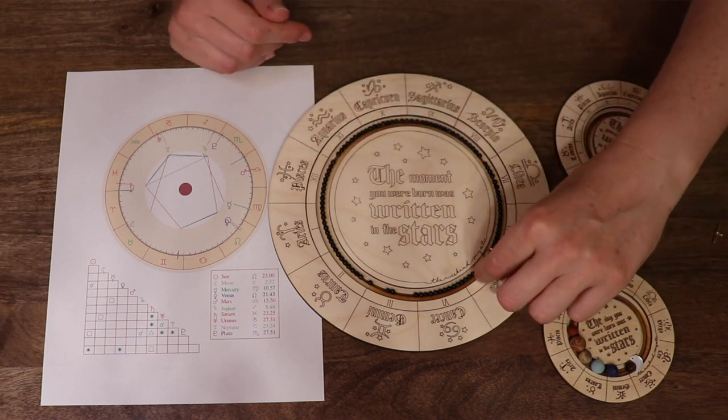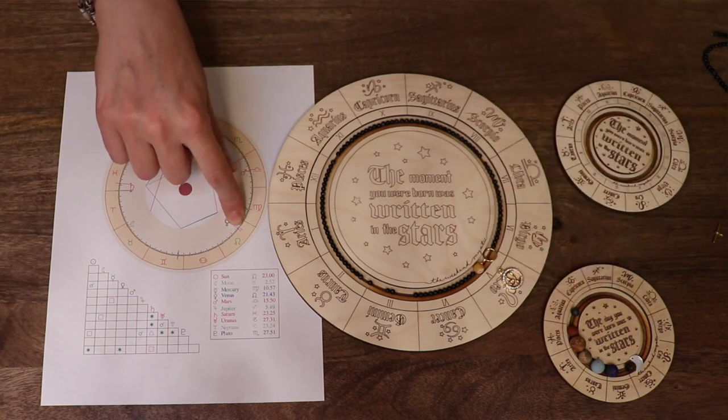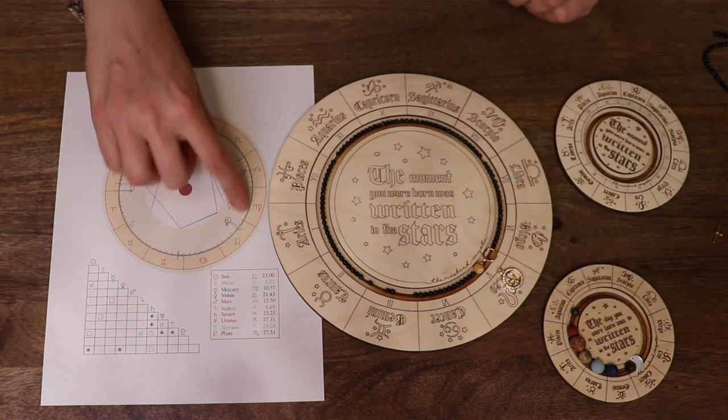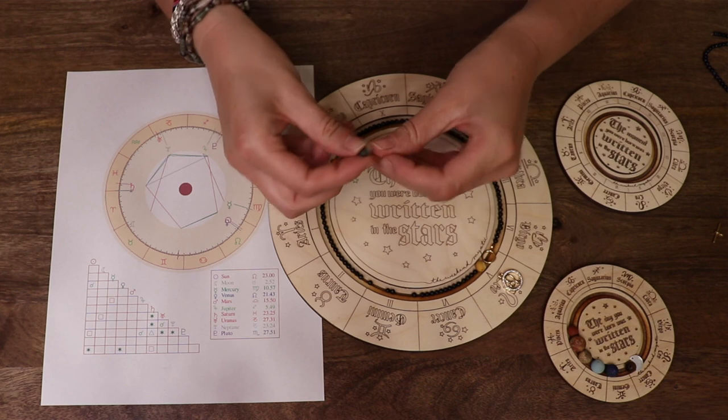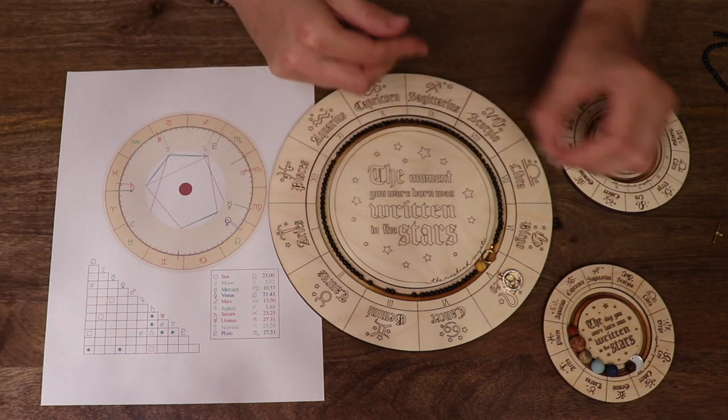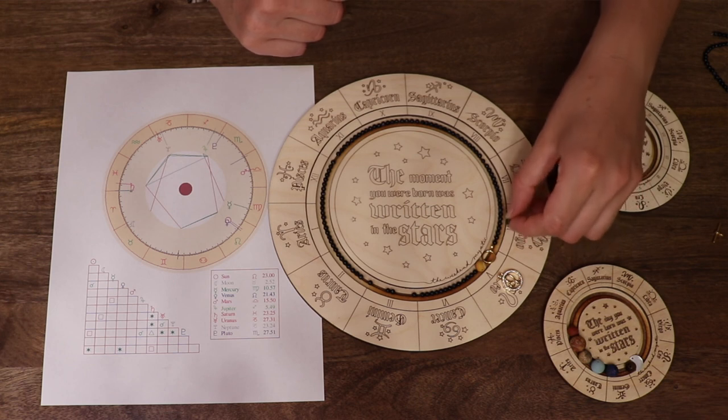So we're going to put that bead, that Venus bead, right next to it. And then let's see, who do we have here? This is Mercury. This tiny beautiful blue aura agate.